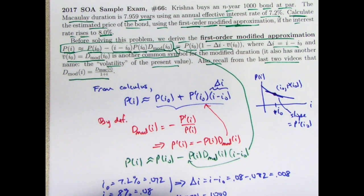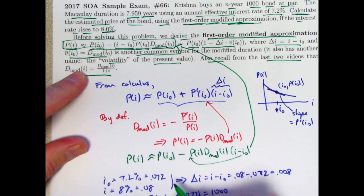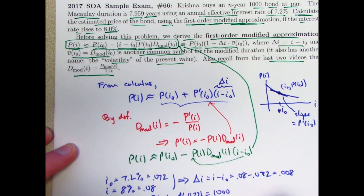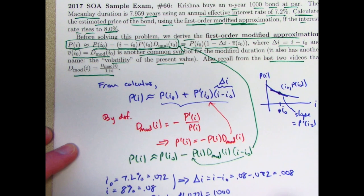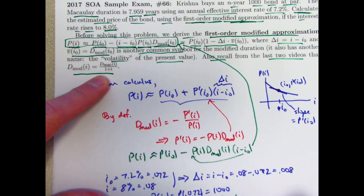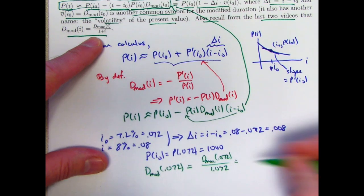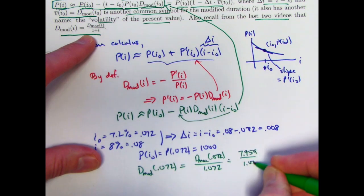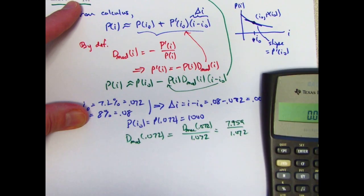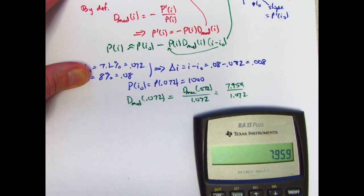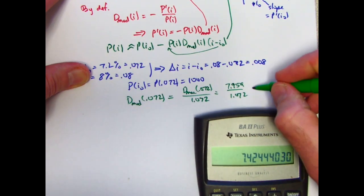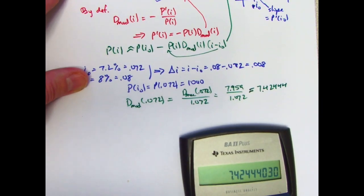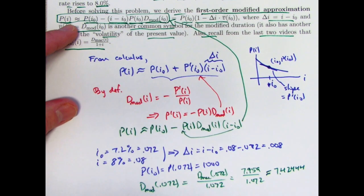We need the modified duration. We're given the Macaulay duration, so we need to find the modified duration from the Macaulay duration using this equation right here. Modified duration at i0, which is 0.072, is the Macaulay duration at 0.072 divided by 1 plus i, 1 plus 0.072, 1.072. We're given that the Macaulay duration is 7.959 years, so this becomes 7.959 over 1.072. Do that calculation, 7.959 divide by 1.072. The modified duration is about 7.42444. That's probably a good enough approximation.